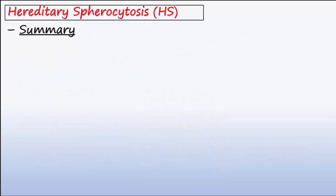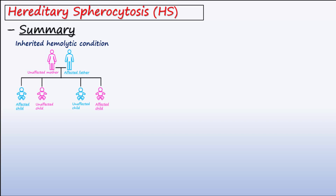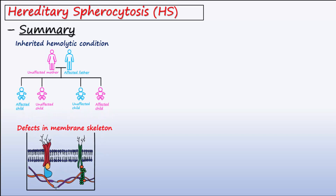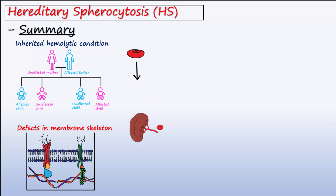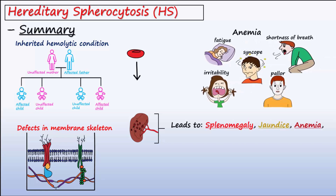In summary, HS is an inherited condition that causes defects in the membrane skeleton of red blood cells. These defects cause RBCs to become spherical and make them prone to premature destruction in the spleen. Important manifestations of HS include splenomegaly, jaundice, and anemia with its associated symptoms. Complications such as aplastic crisis, hemolytic crisis, and gallstones may also occur. However, HS can be treated by a full or partial splenectomy.